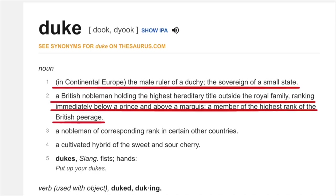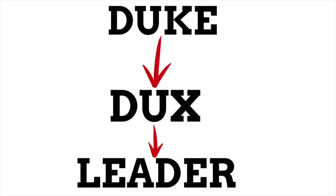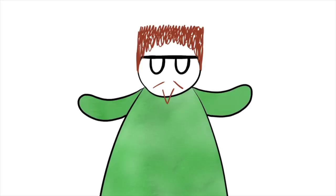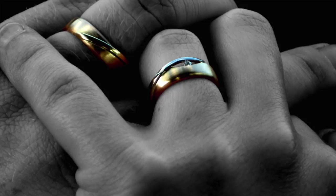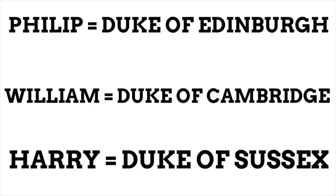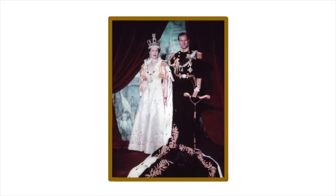'Duke' is defined as the male ruler of a duchy, and also as a British nobleman holding the highest hereditary title outside the royal family — so you can be a duke without being a prince. Duke traces back to the Latin 'dux,' meaning 'leader.' Becoming a duke isn't as tricky as becoming a prince — dukedoms can be inherited, but they're often bestowed, most noticeably on wedding days. Philip was granted Duke of Edinburgh, William got Duke of Cambridge, and Harry was given Sussex on his wedding day — with titles transferring to their wives as well.